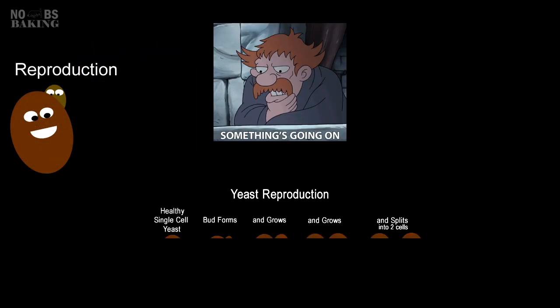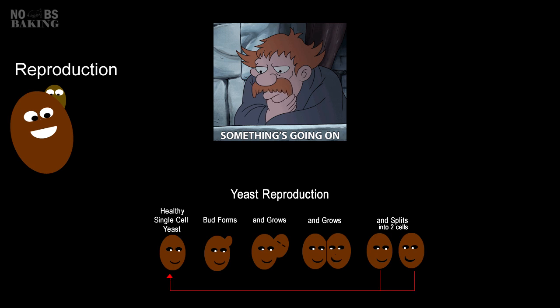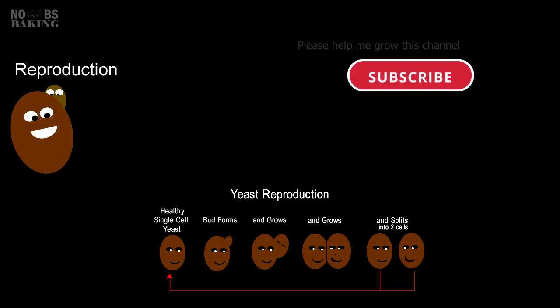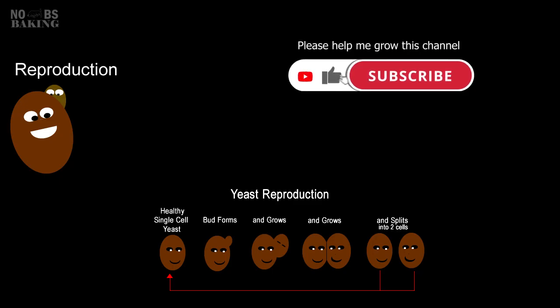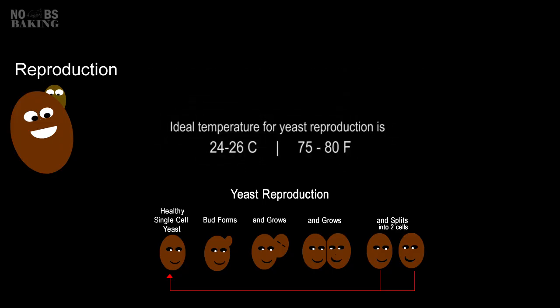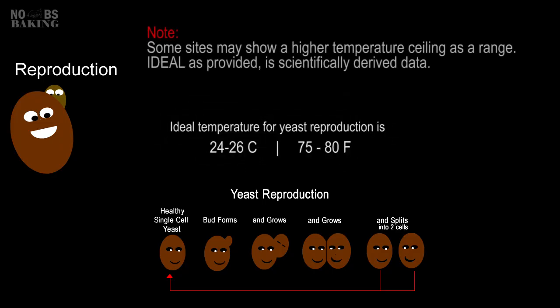Commercial and wild yeast both reproduce asexually by budding, where a small bud forms on the parent cell and grows until it eventually detaches and becomes independent. When yeast is added into a dough, it rapidly reproduces. The budding process usually occurs very quickly under optimal conditions. The ideal temperature for yeast reproduction is 24 to 26°C, or 75 to 80°F.